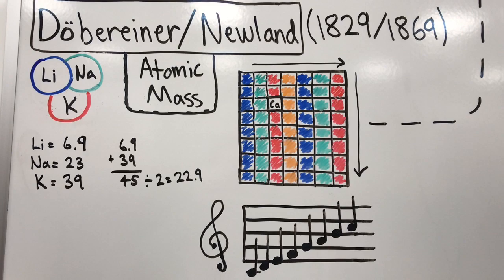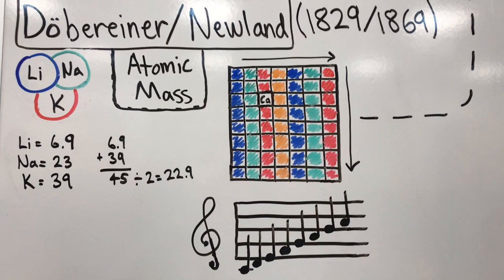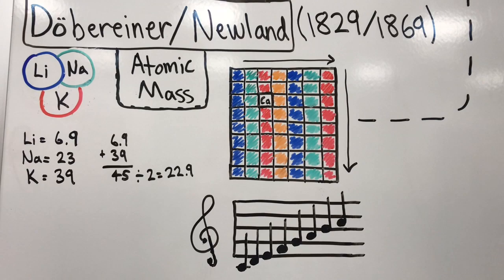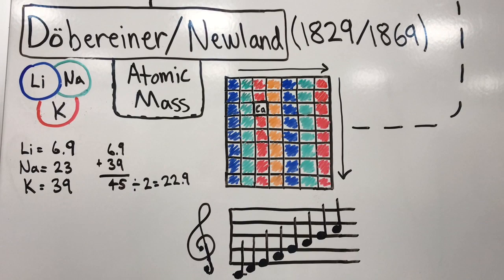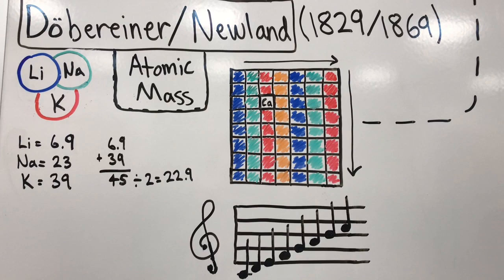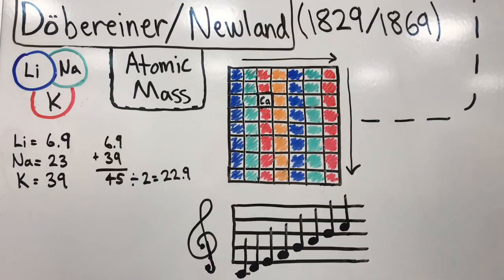So Newlands came along and decided to order all the elements by their atomic mass into one table. When doing this, he discovered that every eighth element had similar properties to the elements above it. This he called the octave rule, following the octave on a piano or in music. The only problem being that Newlands' octave rule was only able to go as far as the element calcium before there was trouble and problems in his thinking.